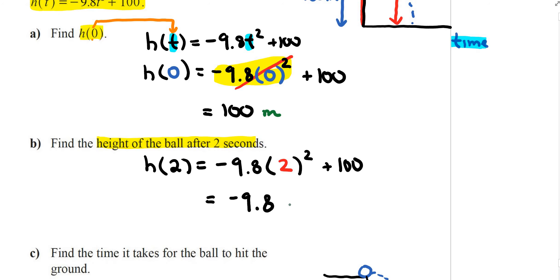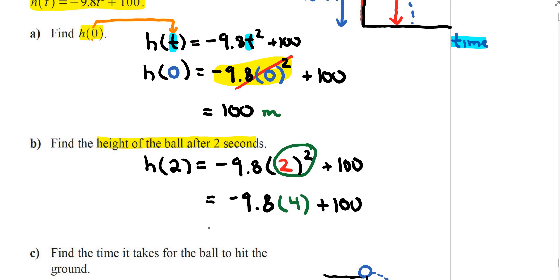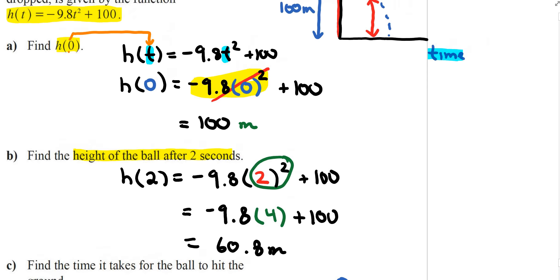I can compute 2 to the power of 2, which equals 4. So I need -9.8 times 4, then add 100 — I'd recommend using a calculator for that. The result is a height of 60.8 meters. So after 2 seconds, the ball is 60.8 meters up in the air.